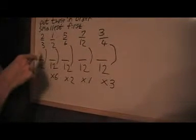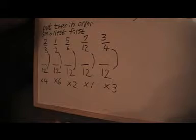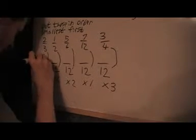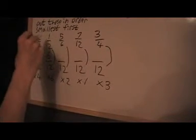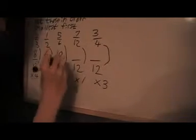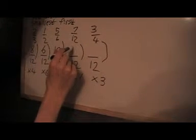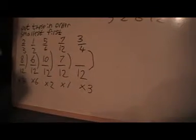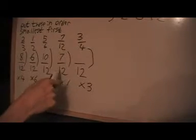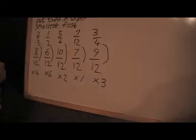I'll put lines here to show what I've multiplied by: 4 for this one, 6 for that one, 2 for that one, 1 for that one, and 3 for that one. Notice how if I divide the original denominator into 12, I get 4, and if I divide that into there I get 6. So I multiply the tops by the same numbers: I get 8, I get 6, I get 10, and multiplying the 3 by 3 here I get 9.